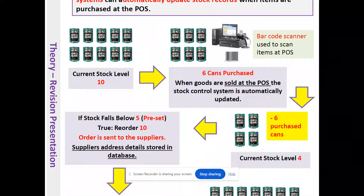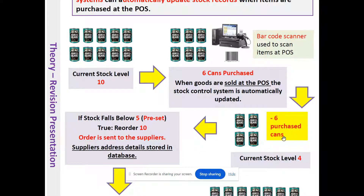For example, at the start of the day there are 10 cans of beans in stock. You're the first customer and you pick up 6 cans of beans. Every time the cashier scans a can of beans it is deducted from stock. So 6 cans are purchased; the stock control system is automatically updated — we had 10, we subtract 6, so the current stock level is now 4. There is a preset: if stock falls below 5 cans (the preset level), the system will automatically reorder 10 more cans of beans.